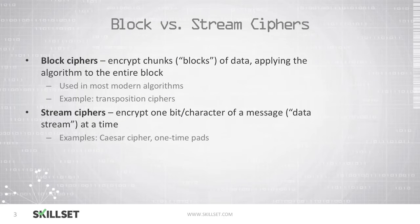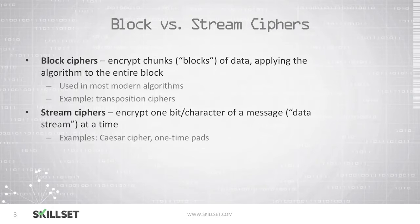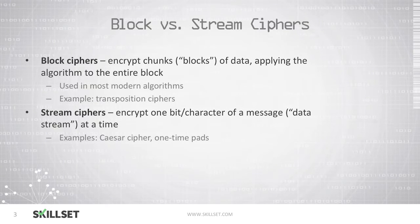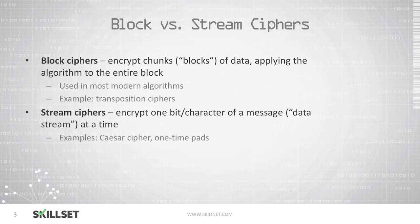We have two different types of ciphers: block ciphers and stream ciphers. A block cipher takes a chunk of the data to be encrypted and encrypts that entire block at one time. This is used in most modern algorithms, and an example is the transposition cipher. With a stream cipher, we only encrypt one bit or one character at a time — this is known as the data stream. Examples here are the Caesar cipher and one-time pads.